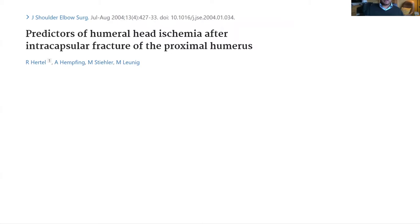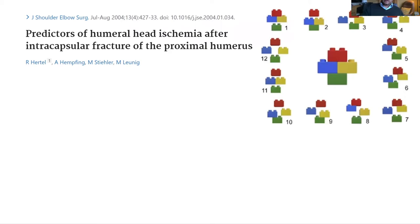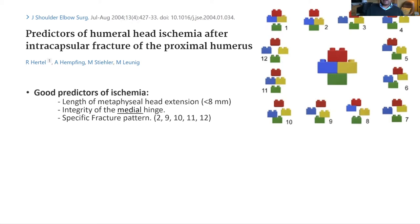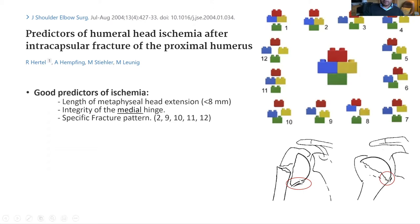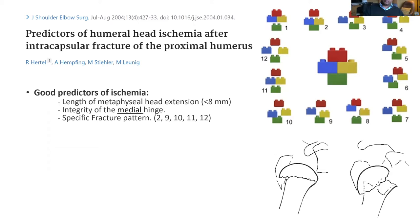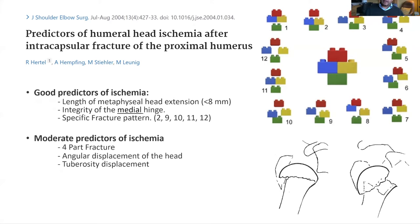In 2004, Hertel published a paper looking at predictors for humeral head ischemia. They showed various fracture configurations in proximal humerus fractures, but the main take-home points were predictors of ischemia. They found that the length of a metaphyseal head extension — if that was less than eight millimeters — was a good predictor of ischemia. This refers to the bone below the humeral head; if it is less than eight millimeters, that's a bad sign. Also, integrity of the medial hinge — if it's disrupted, that's more likely to disturb the blood supply. Specific fracture patterns 2, 9, 10, 11, and 12 were more associated with humeral head ischemia because the humeral head in those patterns is a separate component altogether. Four-part fractures, angular displacement of the head, and tuberosity displacement were considered moderate predictors of ischemia.